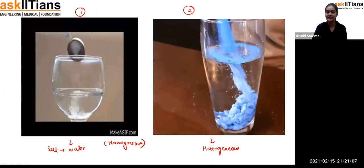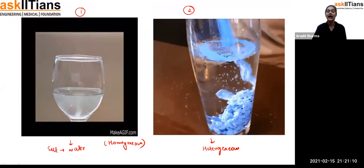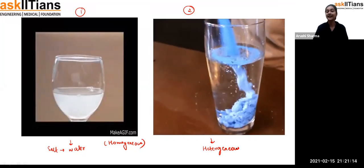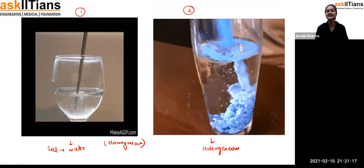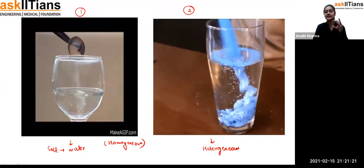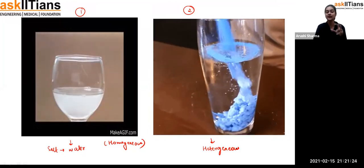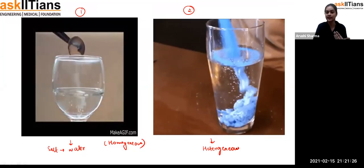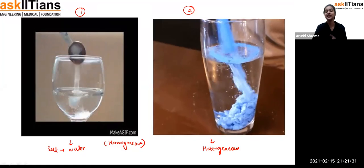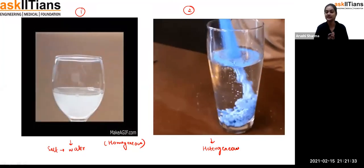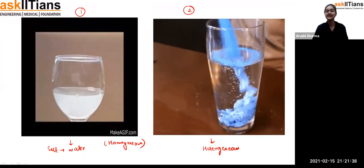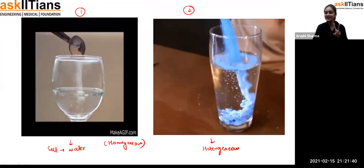We are going to see different types of mixtures in this chapter, how mixtures are formed, and related things. For the homogeneous mixture, when a substance gets completely dissolved in water we cannot find out what was added. For the heterogeneous mixture, it is very much visible to us that something blue has been added.